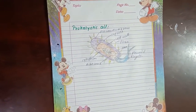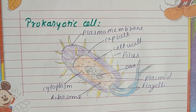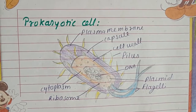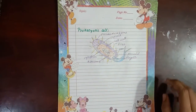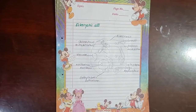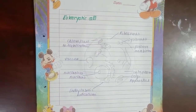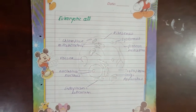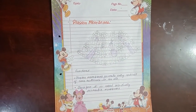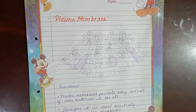Here is the diagram of prokaryotic cells. Here is the diagram of plasma membrane along with its functions.